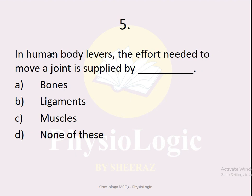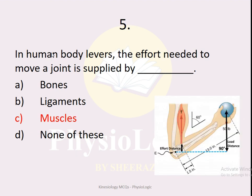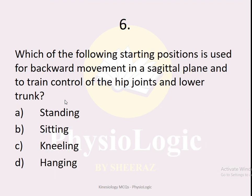MCQ number five: in human body levers, the effort needed to move a joint is supplied by — bones, ligaments, muscles, or none of these? The correct option is muscles. When we move, our muscles contract to help us move. For example, the bicep muscle is inserted at the forearm and when it contracts it results in elbow flexion — the effort is provided by the bicep muscle.